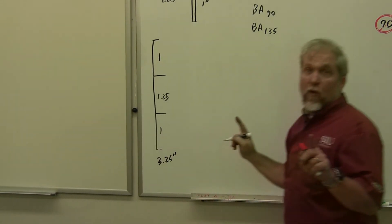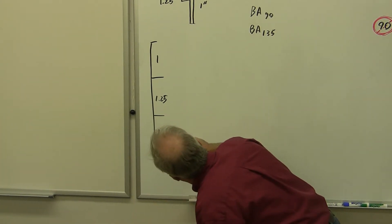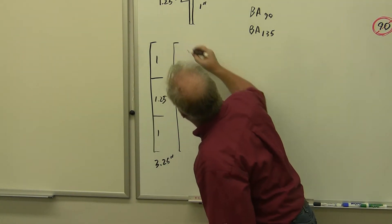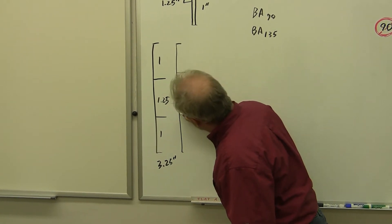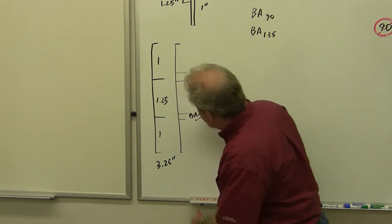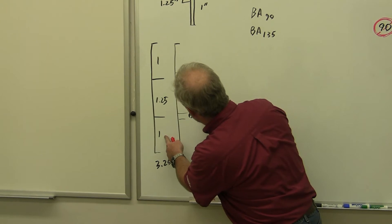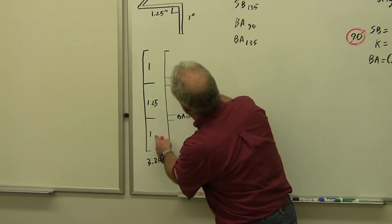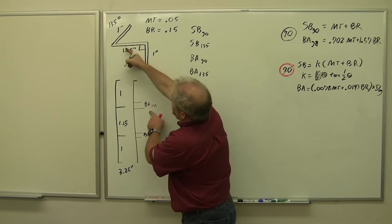But when we transfer this, once again this is our not-to-scale generic representation, it's going to be a little shorter and we need two bend tangent lines for each of these bends. This is going to be the bend allowance 90 and this is going to be the bend allowance 135 for that bend.